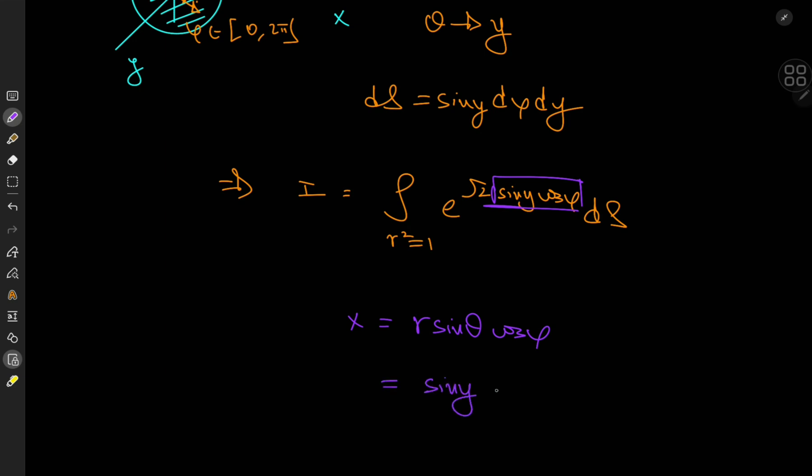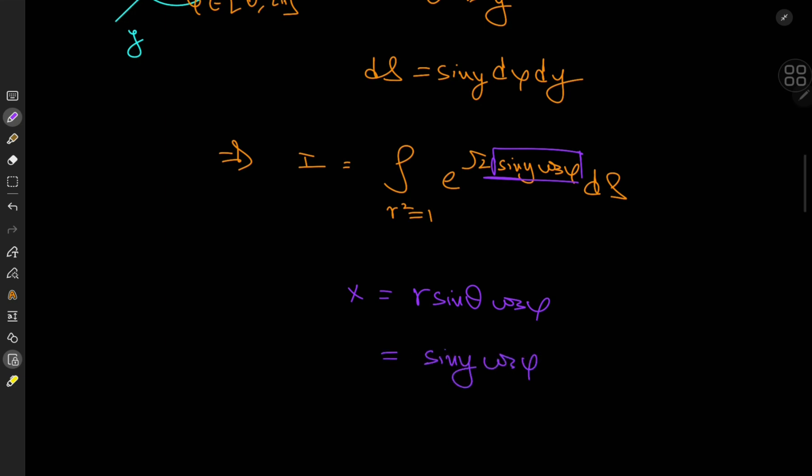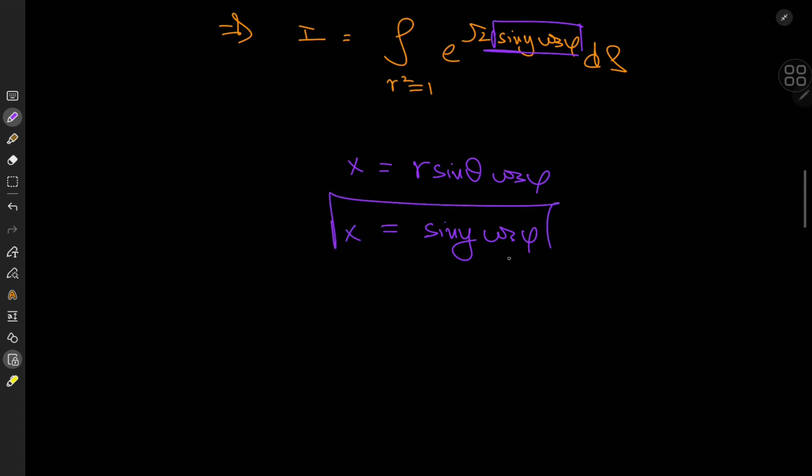And r here is equal to one, your theta is just y, and you still have a cosine of phi term, so that means x here is equal to this product of trig ratios.